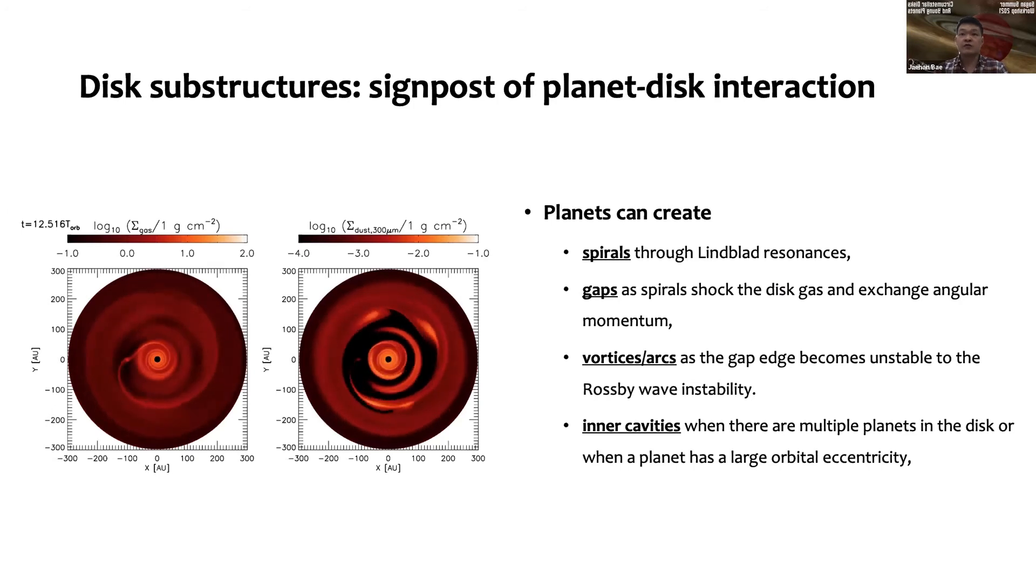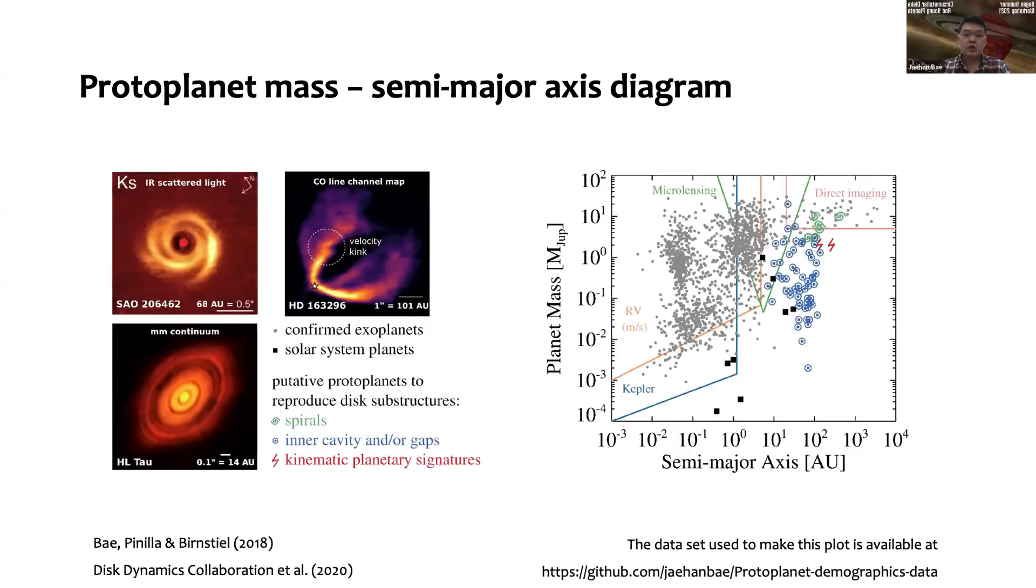Vortices can form at the gap edge as the gap edge becomes unstable to the Rossby wave instability. Planets can open inner cavities when there are multiple planets, or when there is a single planet with very large eccentricity.